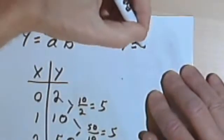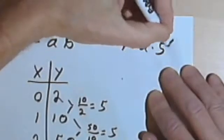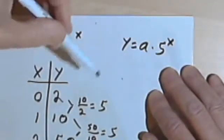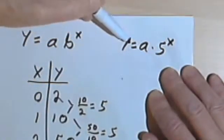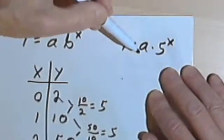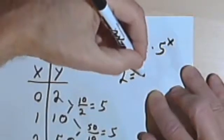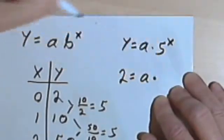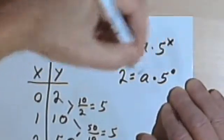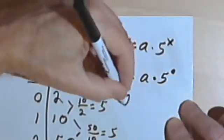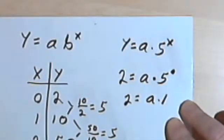So now I can write y equals a times 5 to the x. Well, since I've got all these pairs of x's and y's, why don't I plug those in and see if I can figure out what the a must be. Okay, so when y is 2, I've got a times 5 to the 0 power. Well, 5 to the 0 power is 1. So 2 equals a times 1. So a must equal 2.